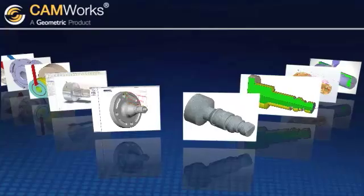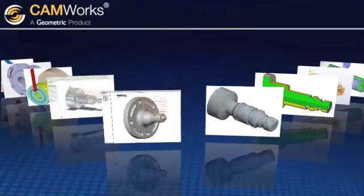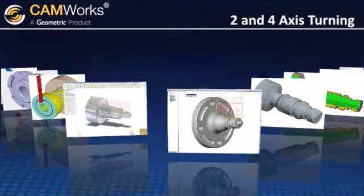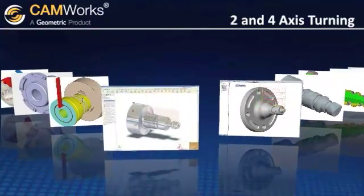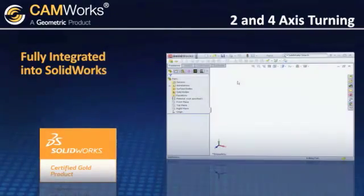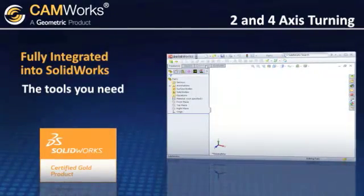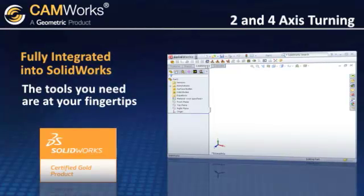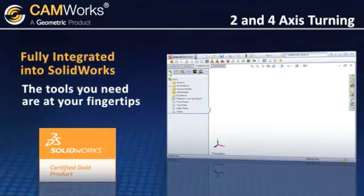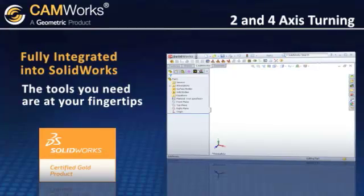When you need to machine parts on a lathe, CamWorks TURN gives you an intuitive way to create fast, error-free toolpaths. Since it's fully integrated into SOLIDWORKS, all of the tools you need are right at your fingertips, and the process of creating toolpaths and G-code is as simple as navigating from left to right on the toolbar.